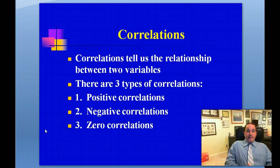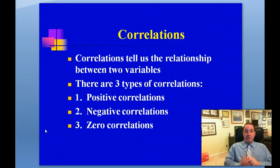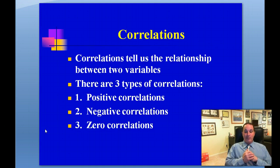Correlations tell us the relationship between two variables. When you think of correlations, you think of the relationship between two variables. There are three types of correlations: positive correlations, negative correlations, and zero correlations.